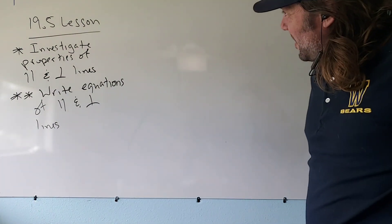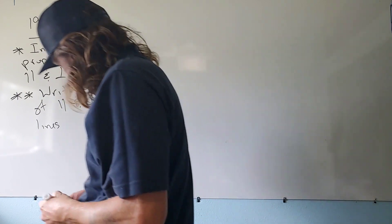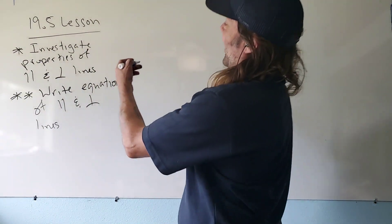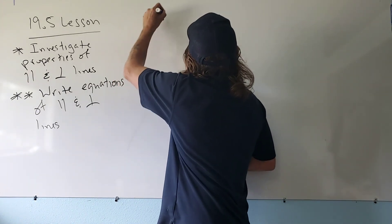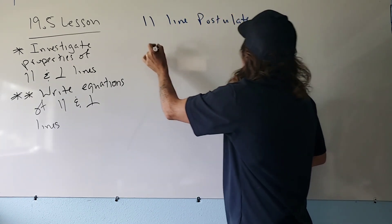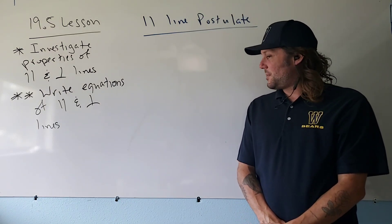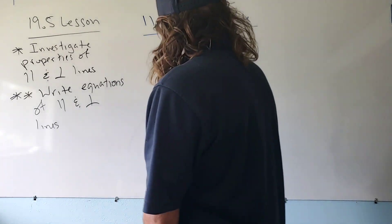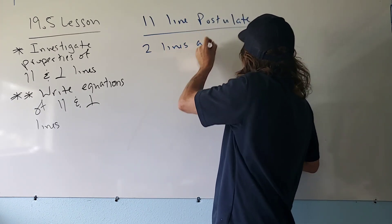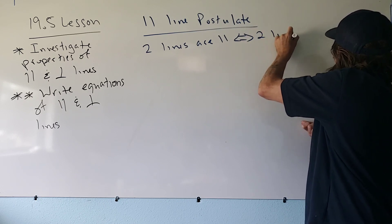The very first thing we're going to talk about is the Parallel Line Postulate. Remember, postulates are ideas that we accept as true. What this says is: two lines are parallel if and only if the two lines have equal slope.